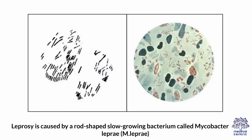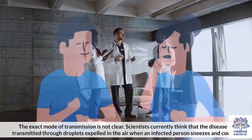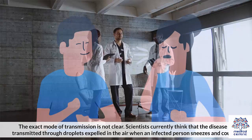Leprosy is caused by a rod-shaped, slow-growing bacterium called Mycobacterium leprae, or M. leprae. The exact mode of transmission is not clear. Scientists currently think that the disease is transmitted through droplets expelled in the air when an infected person sneezes and coughs.